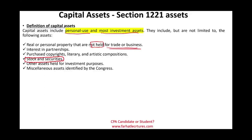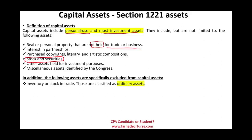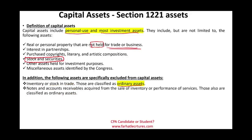The government specifically excludes certain items from being classified as capital assets. Inventory or stock in trade — basically what you're selling as part of your business — is an ordinary asset. Accounts receivable and notes receivable are also excluded because they are generated from inventory or performing services, which is part of your business. Those are ordinary assets.